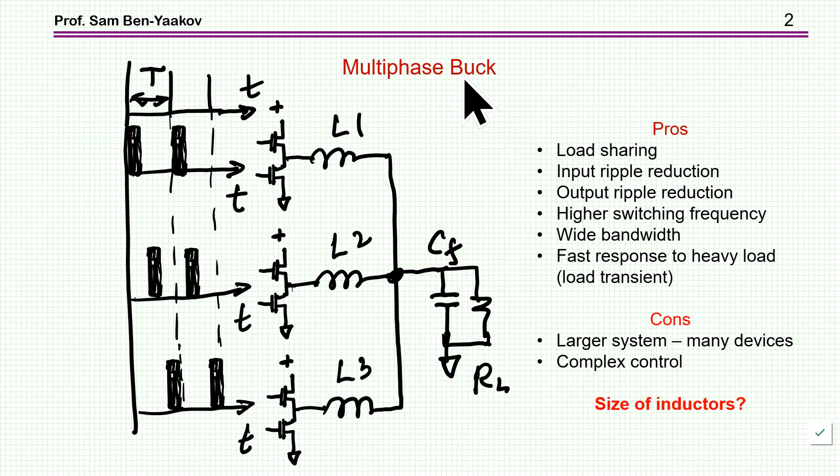So what is a multi-phase buck converter, for example? We have here a number of switchers. This is a synchronous configuration with upper and lower transistors, and we have in this particular case three inductors, and they are fed with pulses which are shifted along the period so that the ripple is not at the same point but shifted, and this of course brings about ripple cancellation at the output. The currents are actually fed to the output, and the advantages of a configuration like this are many.